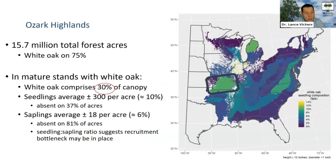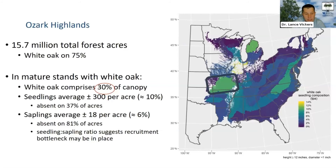Moving further west to the Ozark Highlands, there are 15.7 million total forested acres with White Oak present on 75% of them — this region is really White Oak-centric. In mature stands, White Oak comprises 30% of the canopy. In the understory, there are around 300 seedlings per acre on average, but that makes up only around 10% of all seedlings. Saplings are down to around 18 per acre, which is around 6% of all saplings. On 81% of acres there are no White Oaks present as saplings, suggesting recruitment bottlenecks even in the Ozarks, where regeneration challenges are viewed as less severe than in other parts of the range.